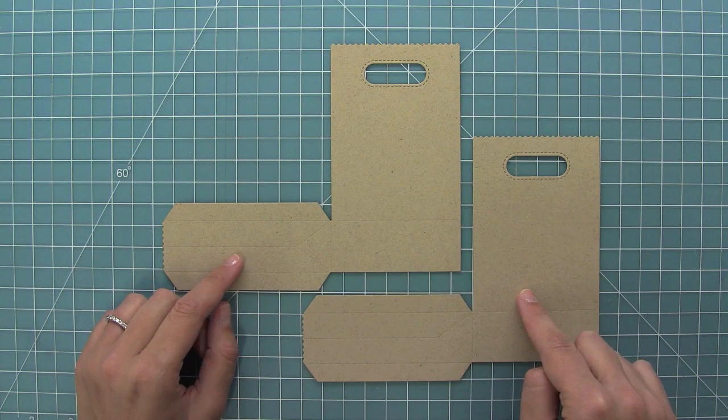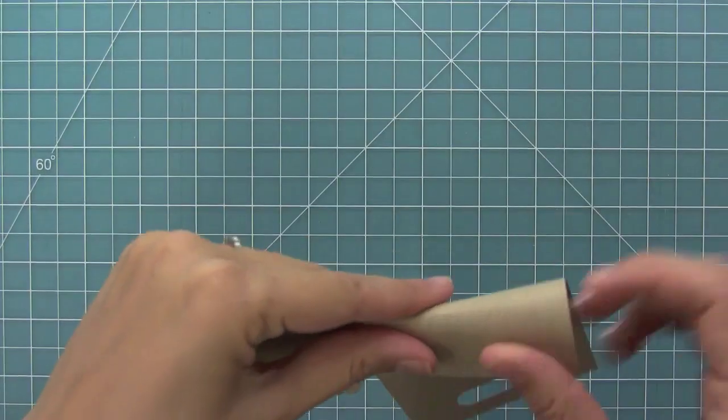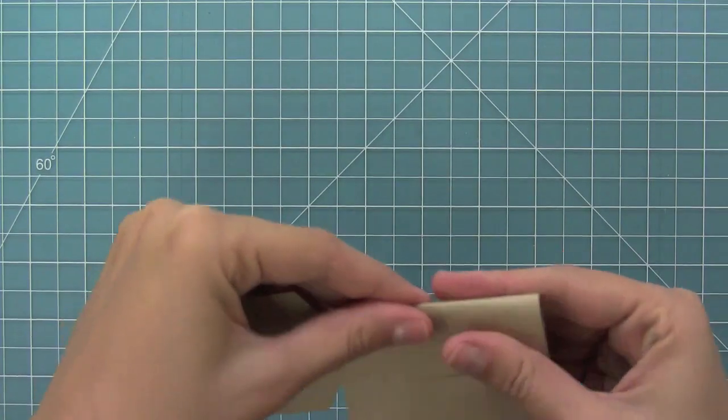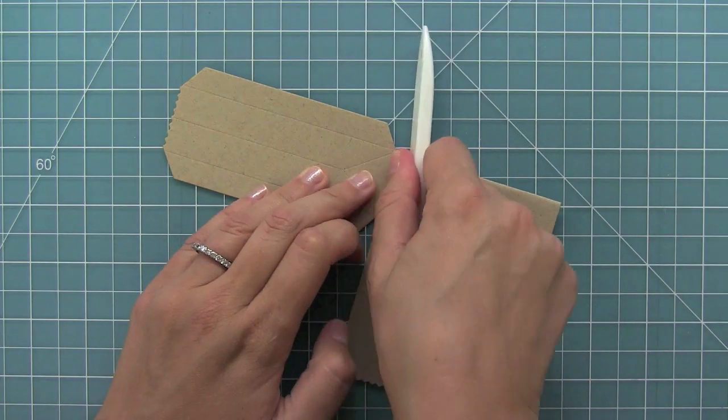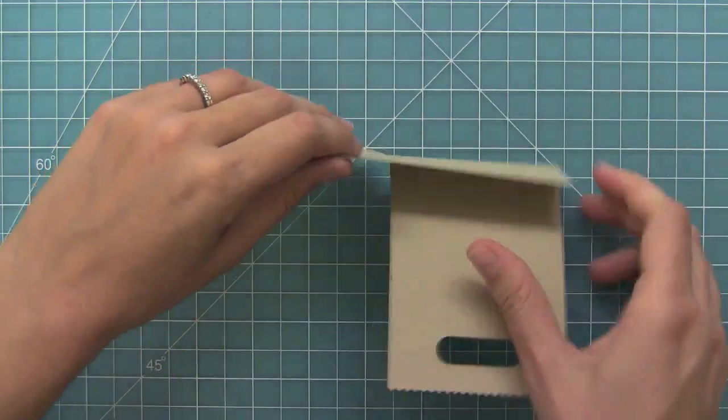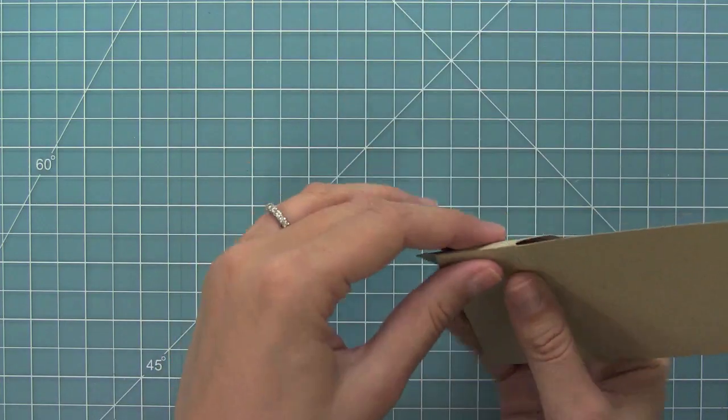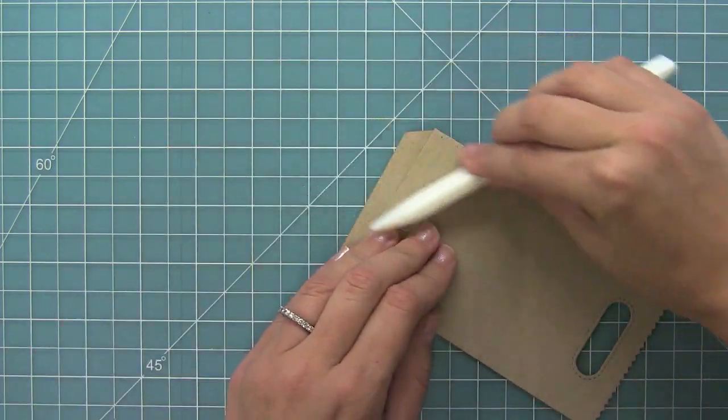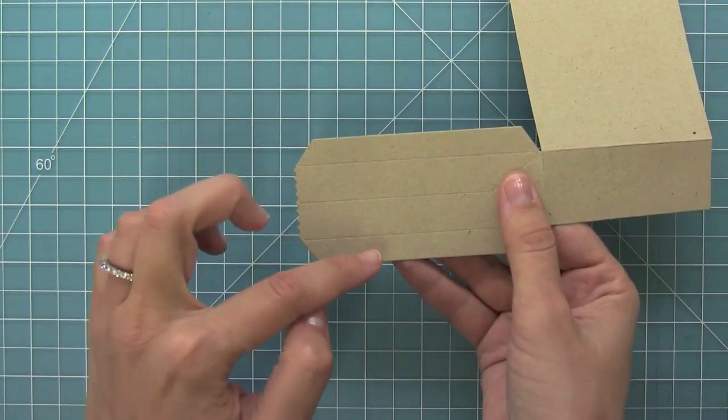Now that I have my two pieces, it's time to start folding all of those score lines that the die did for us. I like to fold right along the edge and then I'm going to go over it with my bone folder. Any kind of flat surface will work and that just creates a really great crease. Now you're going to fold that little side one there and run your bone folder over it again, and then you're going to fold the two side pieces.